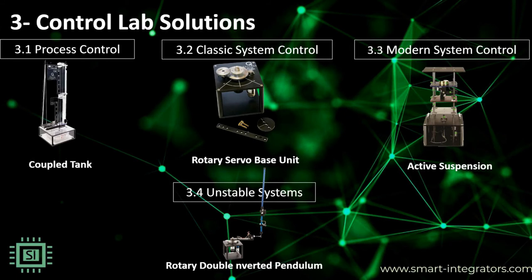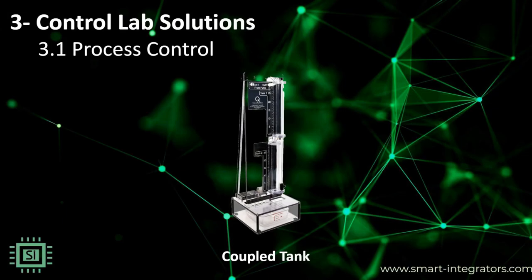Modeling and controls lie at the core of emerging technological breakthroughs — from drones to reusable rockets to self-driving vehicles, the fundamentals of modeling and control are a critical skill for engineers to compete and innovate. Using our solutions, students are exposed to process control, classic systems, modern systems control, and unstable systems control. SI offers a variety of plants that can be used to teach the key elements of modern process control including cascade control with the maglev and ball-and-beam systems as well as regulator design with the coupled tanks.